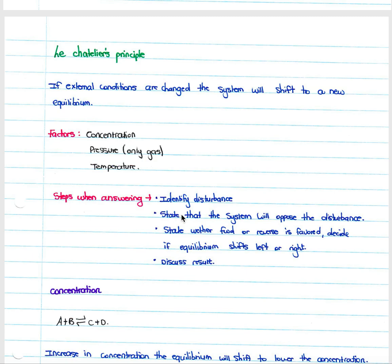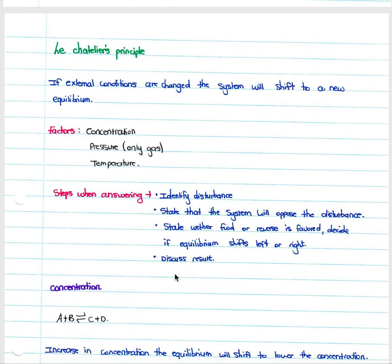When answering Le Chatelier's principle questions, follow these steps. First, identify the disturbance — for example, state that an increase in temperature will do the following. Next, state that the system will oppose the disturbance by Le Chatelier's principle, so the equilibrium will shift to oppose the change. Then state whether the forward or reverse reaction is favored. Finally, state whether the equilibrium shifts left or right, and discuss the result — for example, that the concentration of a product will increase.